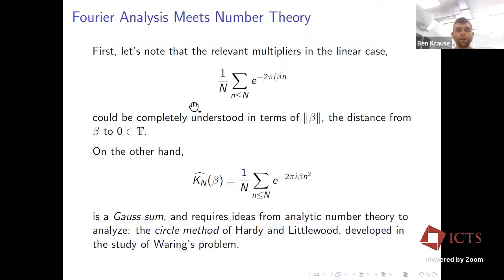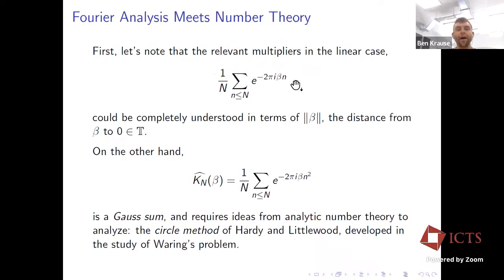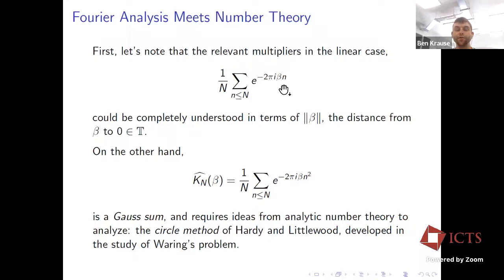We can express these averaging operators in terms of convolution operators. Here δ_{n²} is the point mass at n², equal to one when x = n² and zero otherwise. Computing the Fourier transform of these averages gives an exponential sum, and I can view these averages in terms of Fourier multipliers: take the Fourier transform of my function, multiply by this exponential sum, then invert. This is a natural perspective — we're interested in L² behavior and we know how the Fourier transform intertwines convolution and multiplication.